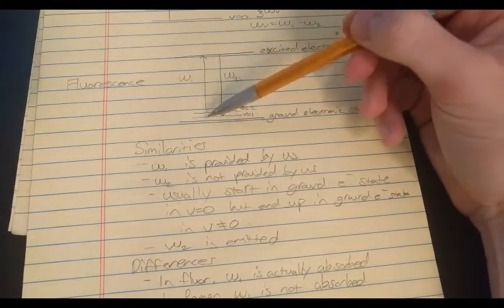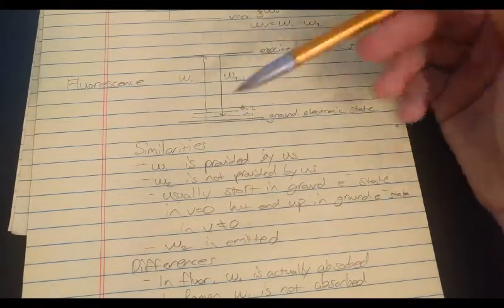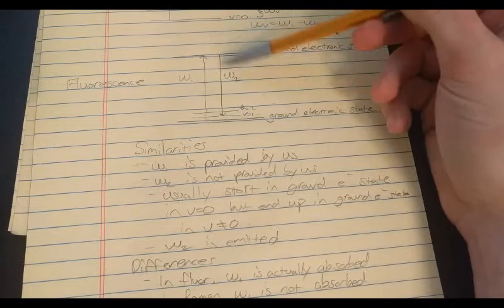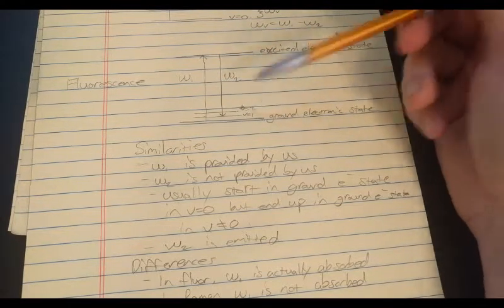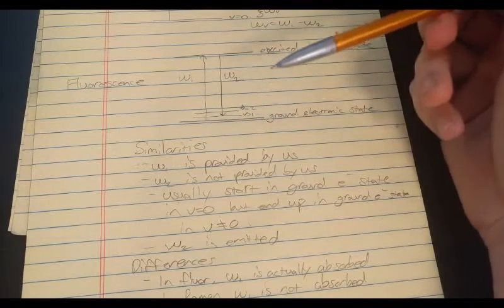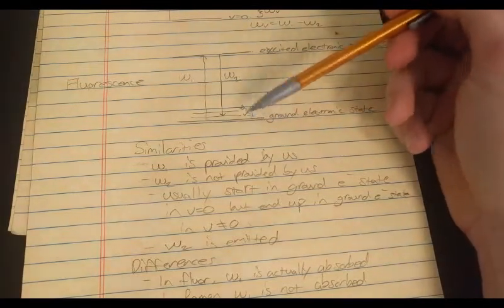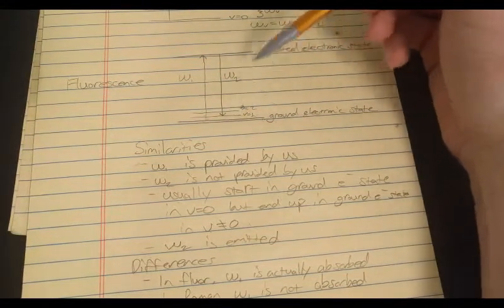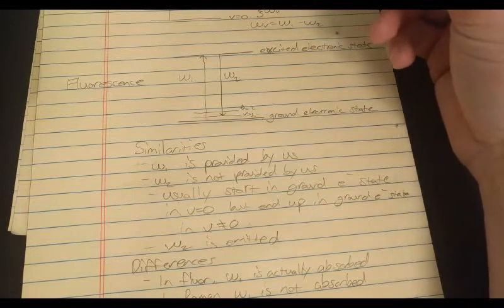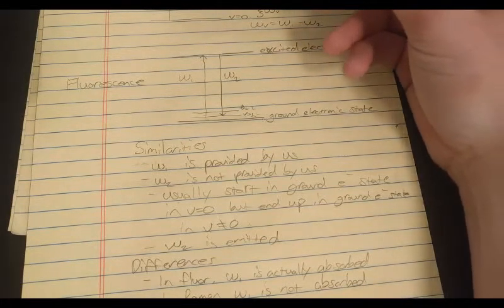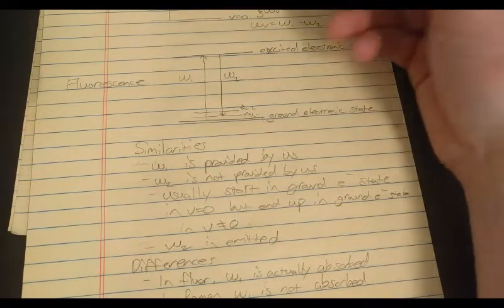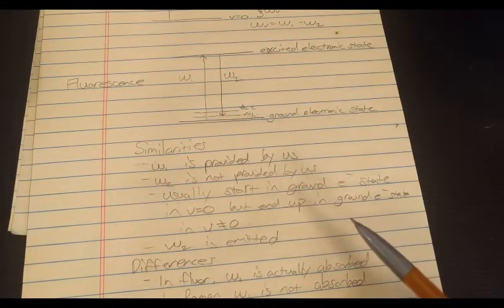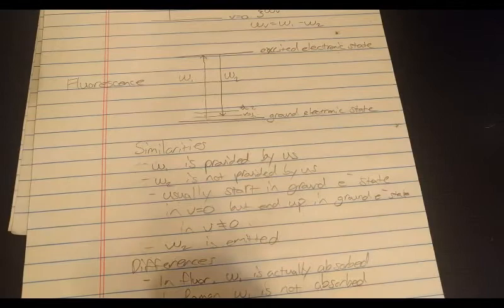So omega one brings an electron from the ground state to the excited state, and the electron sort of decides in some sort of way that it's going to come back down to the ground state and end up in a vibrational excited state. Or it could also end up in the ground vibrational state too. But more than likely, it'll be one of the excited vibrational states. And then in Raman, omega one doesn't actually bring the electron to the virtual state.